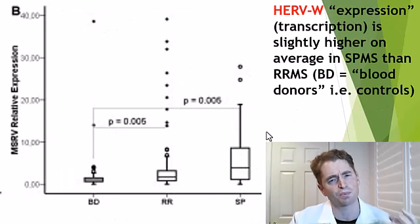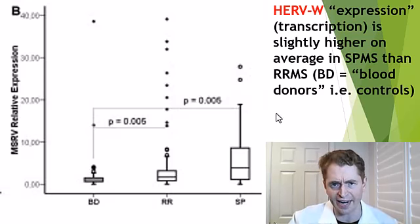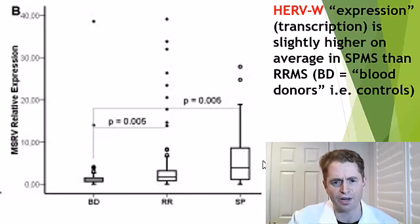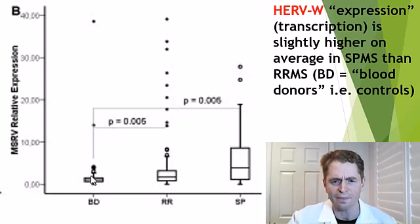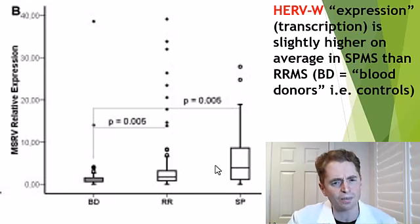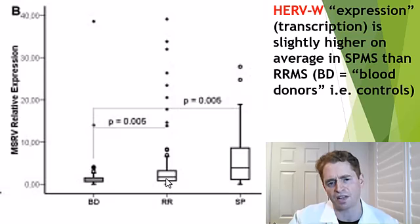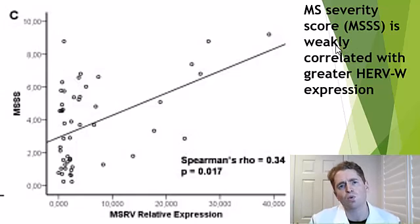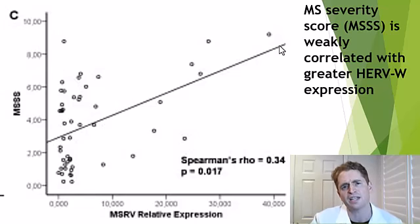This study looks at HERV-W expression — that is, how much of this endogenous DNA gets transcribed into RNA. They compared blood donors as controls without MS, people with relapsing-remitting MS, and people with secondary progressive MS. The data are all over the place for individuals, but on average there's a slight trend: people with MS have slightly more expression, and those with secondary progressive MS tend to have a little more transcription than those with relapsing-remitting MS. There's also a weak correlation between HERV-W expression and the MS severity score, with more expression linked to greater disability.